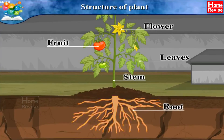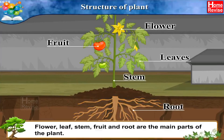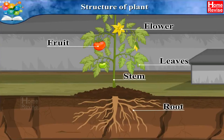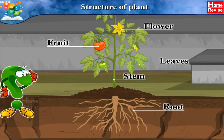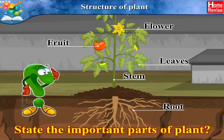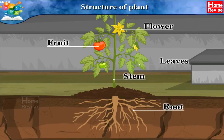So students, flower, leaf, stem, fruit, and root are the main parts of a plant — do remember this. You might get a question based on this, such as: state the important parts of a plant. Now let's start the detailed study of each part of the plant.